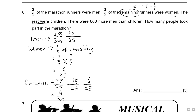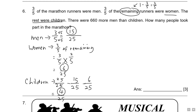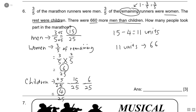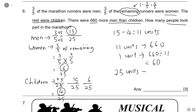So: 15 units for men, 6 units for women, 4 units for children. Circle these — it helps in the exam; use a highlighter if you want. The question says there are 660 more men than children. Men has 15 units, children has 4 units, so the difference is 11 units. 11 units equals 660 people, so 1 unit = 660 ÷ 11 = 60. There are 25 units in total, so 25 × 60 = 1,500 people took part.